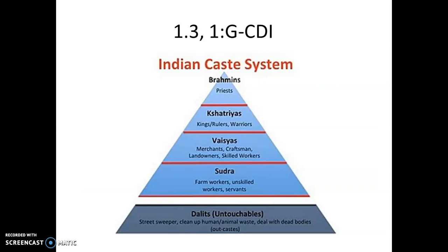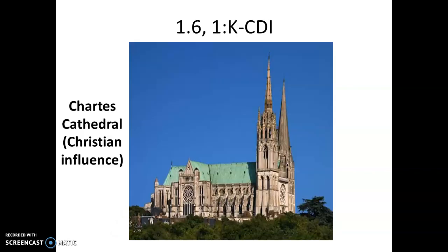Transitioning back to South and Southeast Asia — Hinduism is definitely something to be aware of. Here we see the different levels of the caste system in India. The caste system was very rigid and deeply intertwined with the Hindu faith. Even though there has been some chipping away at it over time, remnants of the caste system can still be seen in modern South Asian society. So we have Buddhism, Islam, and Hinduism.